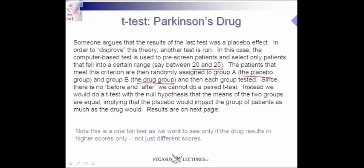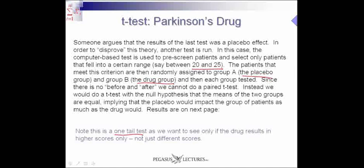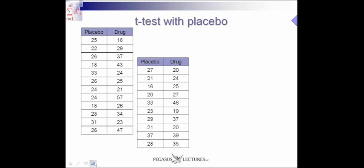Then we test each group. Since there is no before and after — we're not taking the same patient and testing them before the drug and after — we now have two distinct groups and cannot do a paired t-test. Instead, we do a t-test with a null hypothesis that the means of the two groups are equal, implying that the placebo would impact the group of patients as much as the drug. This is going to be a one-tail t-test, because we really want to check whether the drug had a positive effect. In the other cases, the drug could have a positive or negative effect — two possible outcomes. In this case, we're only looking in one direction.